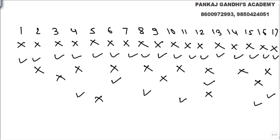The sixth person changed all the multiples of 6 — 6 was on, he made it off; 12 was off, he made it on; 21, 28, going on. The seventh person changed all multiples of 7 — 7 was on, he made it off; 14 was off, he made it on; 21, 28 going on. The eighth person changed all multiples of 8 — 8 was on, he made it off; 16 was on, he made it off; 24 and till 100 going on.